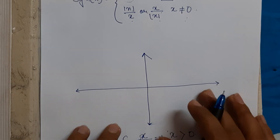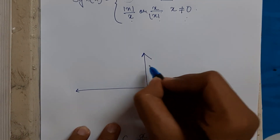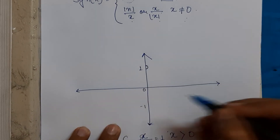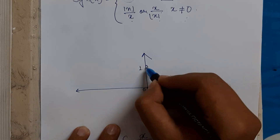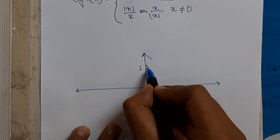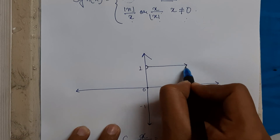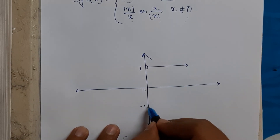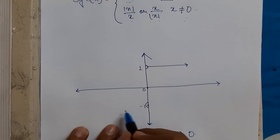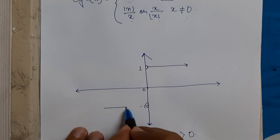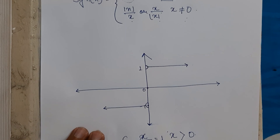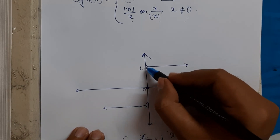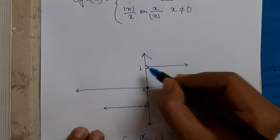Looking at the graph of the signum function: when x is greater than zero, the function is constant at 1; when x equals zero, it returns zero; when x is less than zero, it is constant at -1. When x achieves the boundary, it jumps — there is no value in between, making it a discontinuous graph.